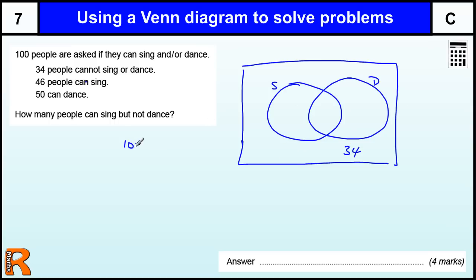That leaves us with 100 minus 34, which is 66 people, to go inside our Venn Diagram.